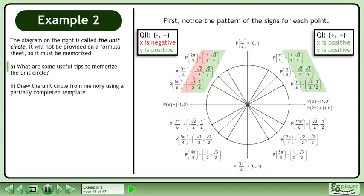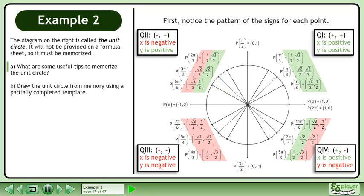In the second quadrant, x is negative and y is positive. In the third quadrant, x is negative and y is negative. In the fourth quadrant, x is positive and y is negative.